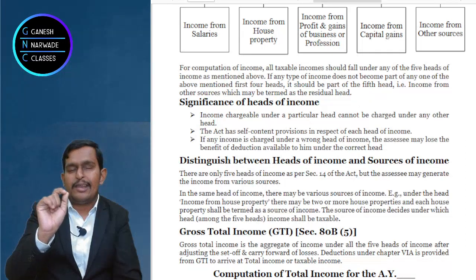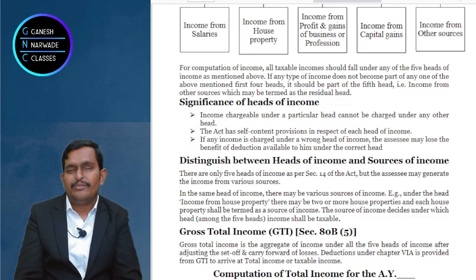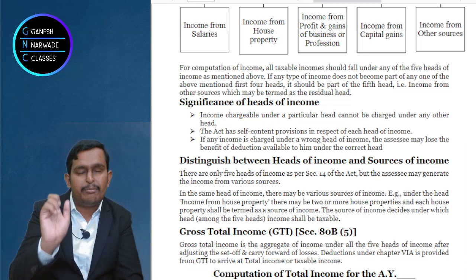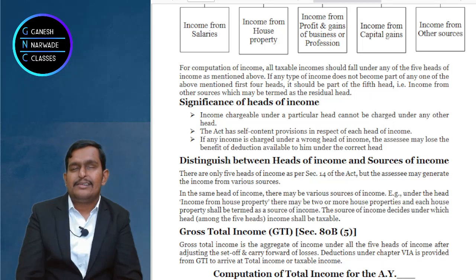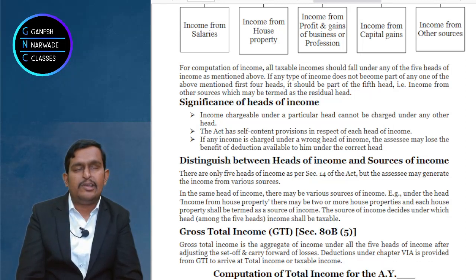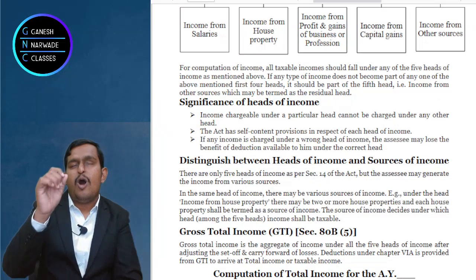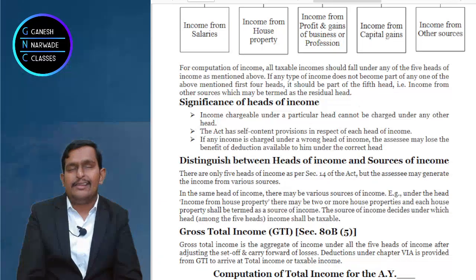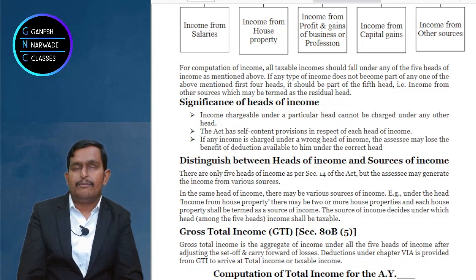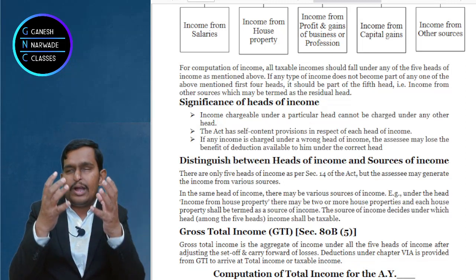The significance of heads of income: every income should be taxed under the particular head to which it belongs. For example, if you receive house rent allowance from your employer, it is taxed under salary head where you can deduct the rent paid. If HRA were taxed under house property, there would be no section permitting the rent deduction there. So each income must be taxed under its respective head so that the correct deductions can be claimed.